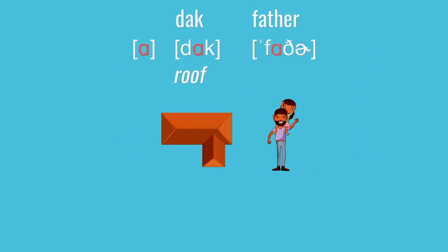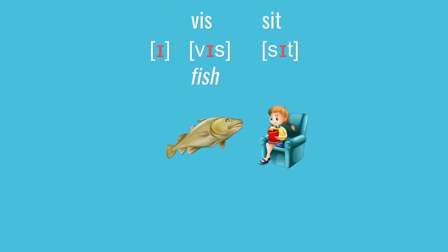Next up, A. This one shows up in English as in father and in Dutch in words like duck, and it is basically the same in both languages. After that, we have I as in English sit and Dutch vis. Again, this one is basically the same in Dutch and English.